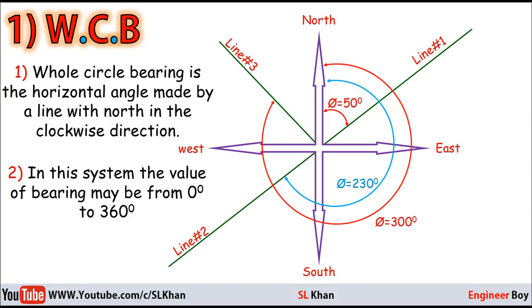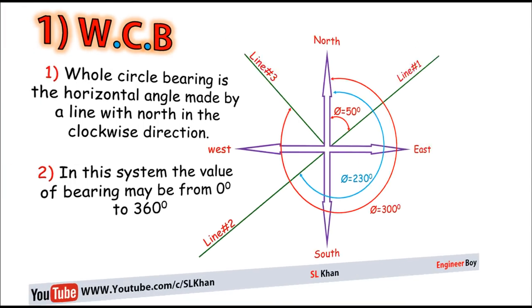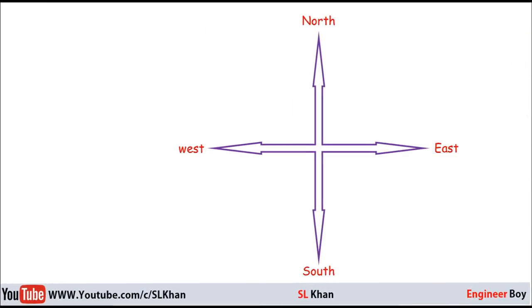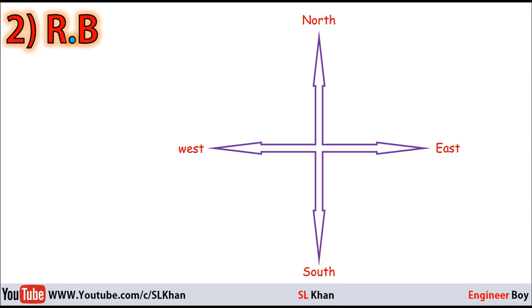So this is the Whole Circle Bearing system. In this system, the bearing is always taken clockwise from the north toward the line. That's quite simple. Let's go ahead for the other bearing system, which is the Reduced Bearing system.